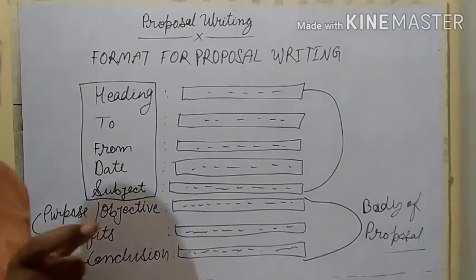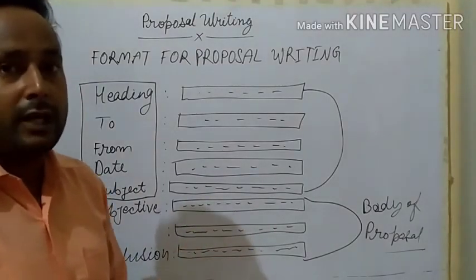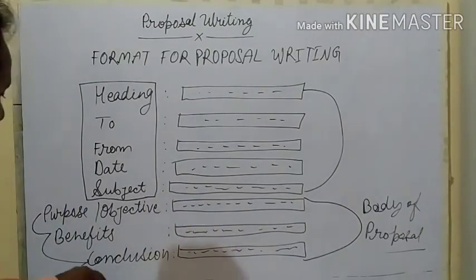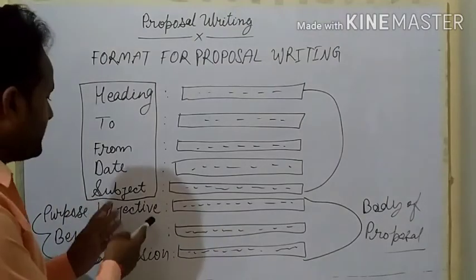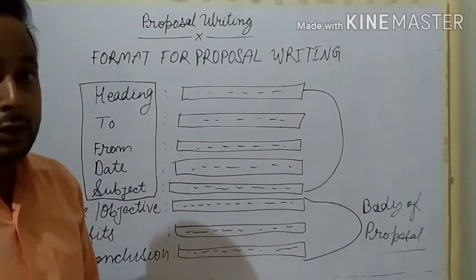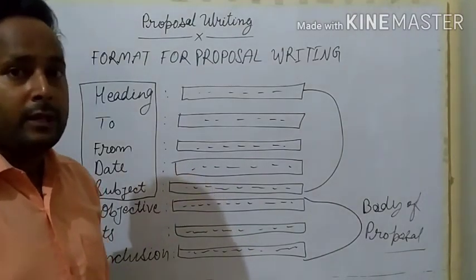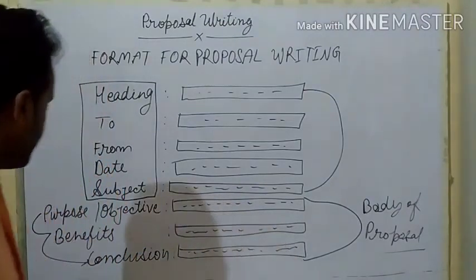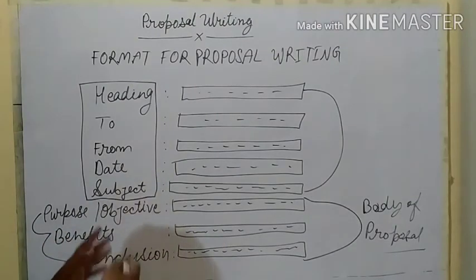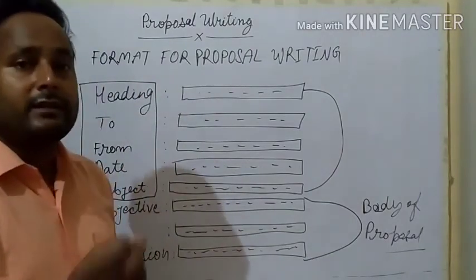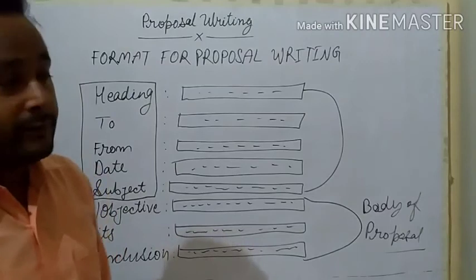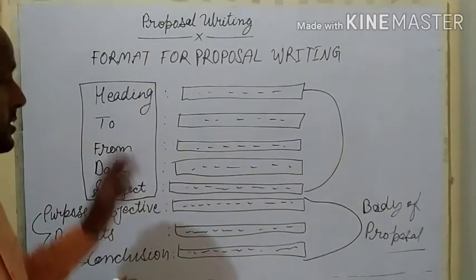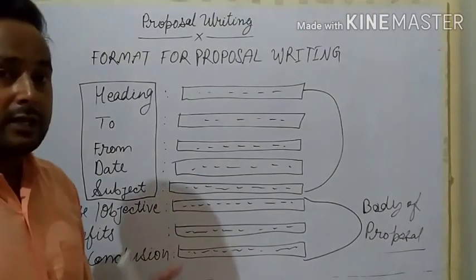After the basic details comes the body of the proposal, which is the most important part. The body includes: the Statement of Objective (also called purpose and objective), Benefits (list of measures), and Conclusion. In the statement of objective, you write a short paragraph of four or five lines about what benefits will come from this proposal if it is accepted and worked upon. Then you list the benefits, and finally write the conclusion — if you do all this, your format is complete and your proposal is ready.